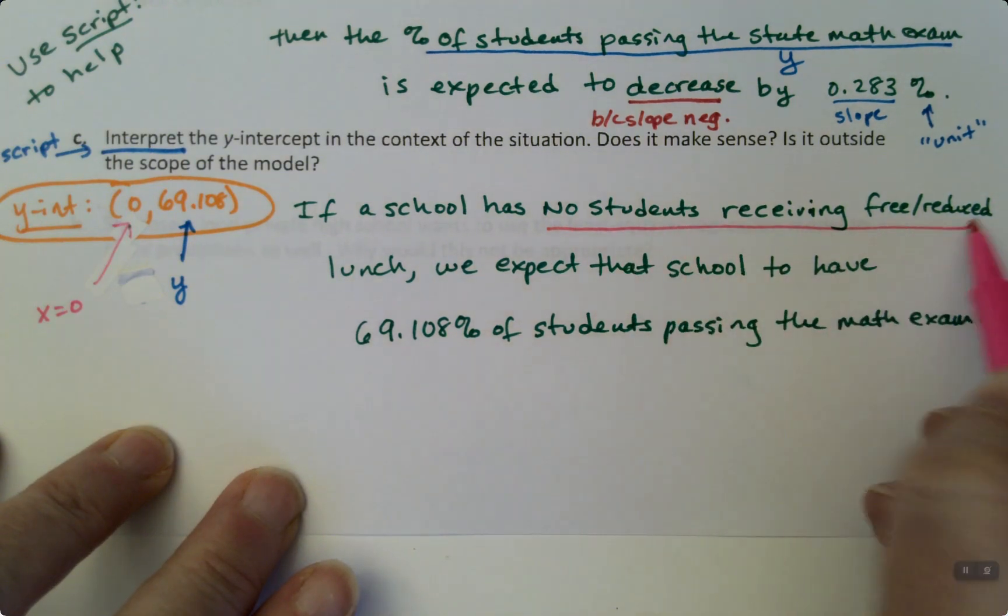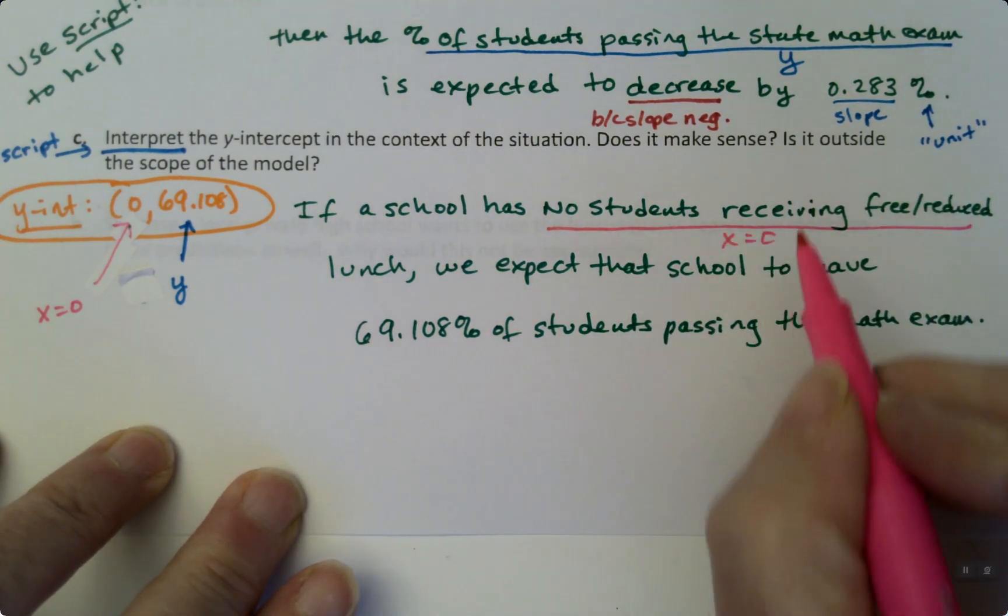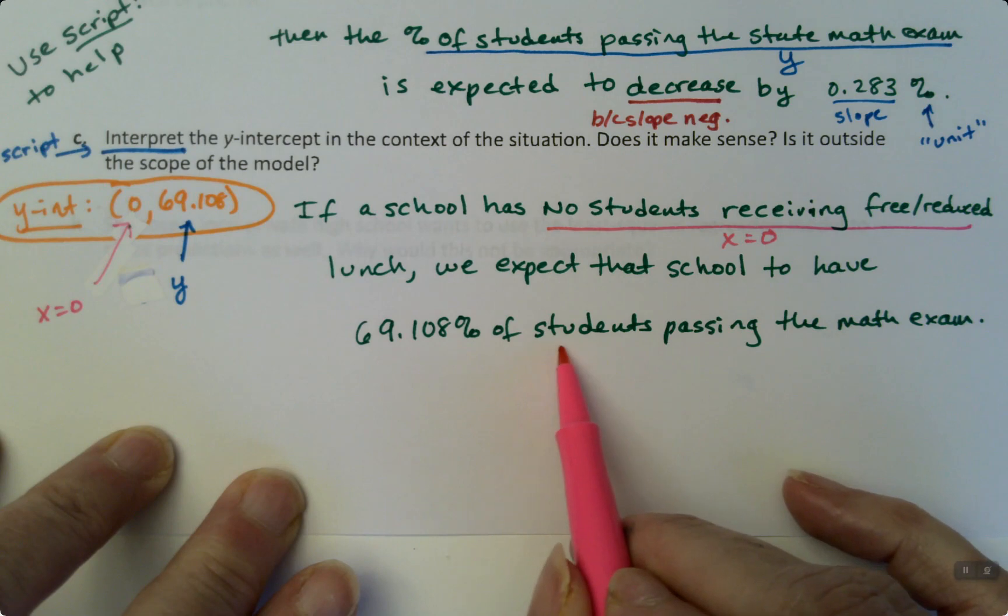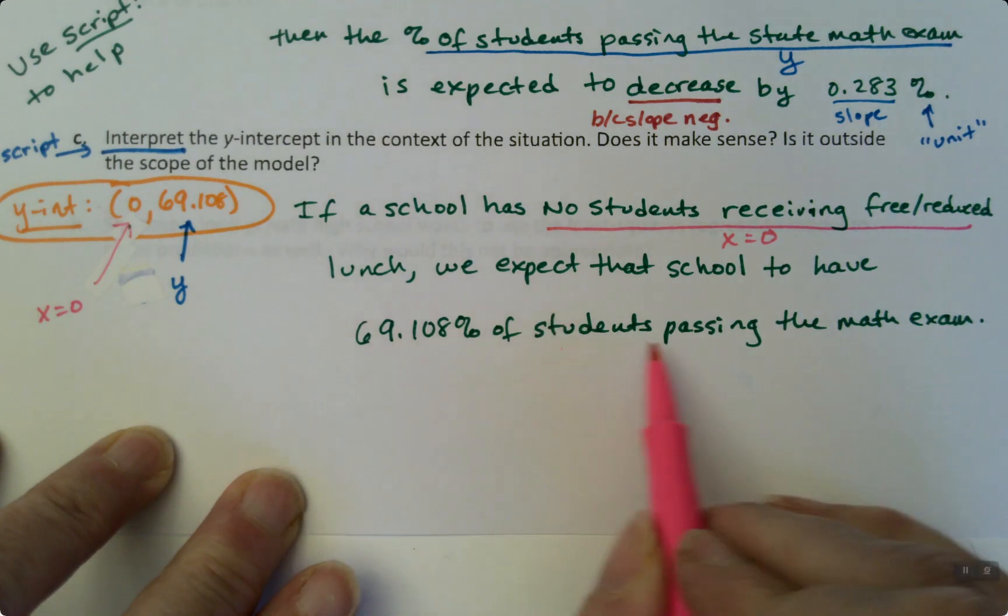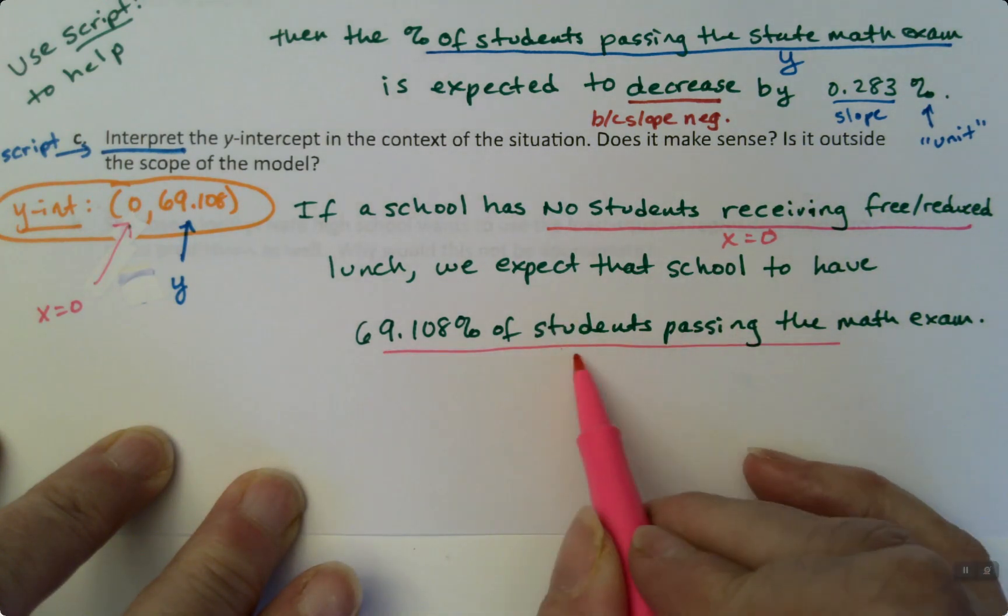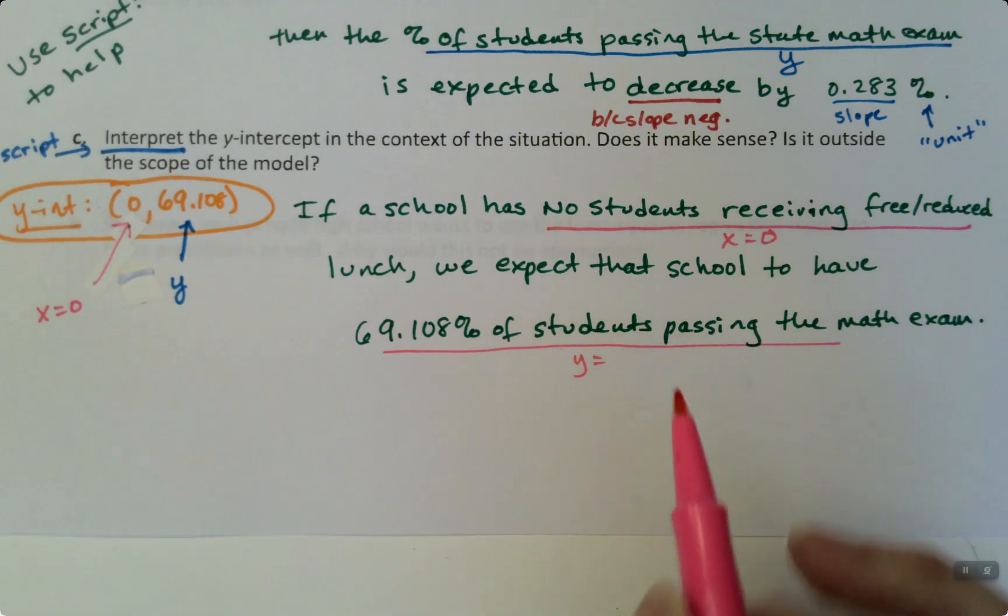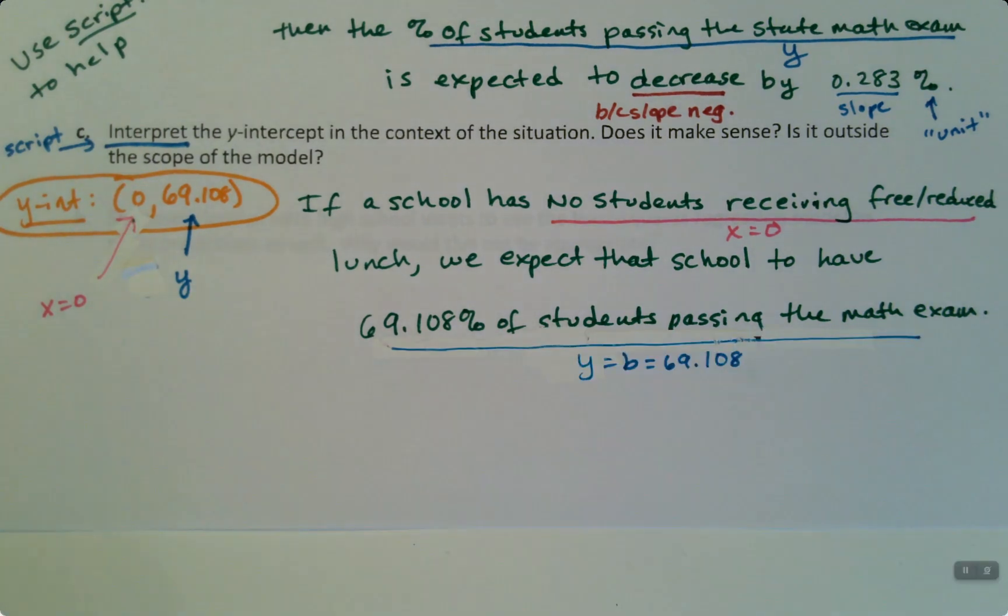Then Y is your students passing the math exam. So down here, Y is 69. Y equals B. Sorry, my colors are off. There we have it.